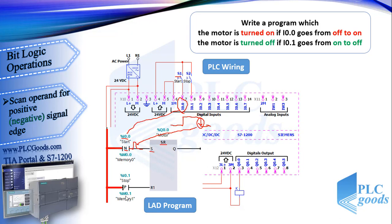The second line works like the first line. Pay attention: this instruction works based on the I 0.0 address, not the state of the virtual power which is called RLO.